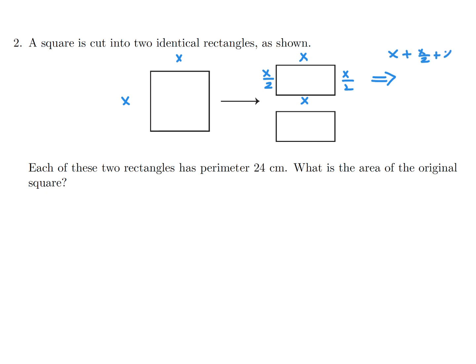So that means X plus X over 2 plus X plus X over 2 is equal to 24, so that is 3X equals 24 and therefore X equals 8. So this side is 8, and what is the area of the original square? The area is 8 by 8, and that is 64.